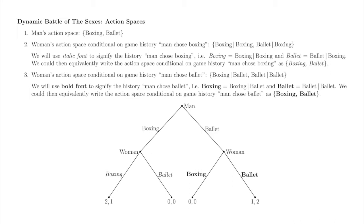Here's the game tree from Dynamic Battle of the Sexes again. It has three non-terminal nodes, each of which has an associated action space. Each action space belongs to the player whose move it is at the associated node. The man has one move, so he has one action space. The woman has two moves, so she has two action spaces — one action space per move.